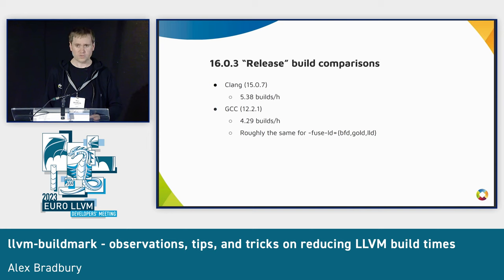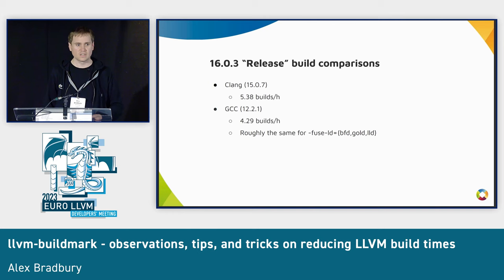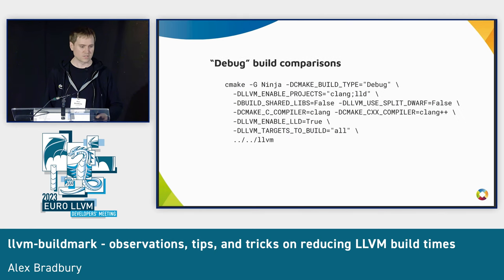For this from-scratch release build of Clang and LLVM, I actually didn't see much difference between the different linkers. As we'll see on the next slide, the stress on the linker is massively reduced for the release build versus debug builds, which — as you may know if you've done work with debug builds — are absolutely huge.